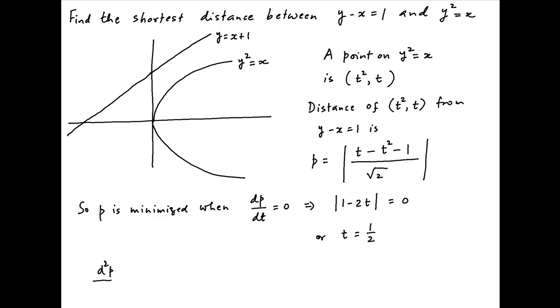Now the second derivative of P with respect to t equals the absolute value of minus 2, which is equal to 2, which is positive. Therefore, the minimum value of P is reached when t equals one-half.